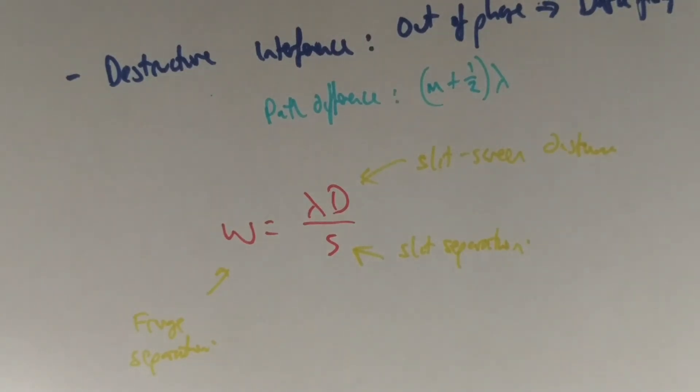Looking at this equation, we can see very easily what effect would our wavelength have on our fringes, what effect would the distance have on the fringes, and what effect would the separation of the slits have on our fringes.